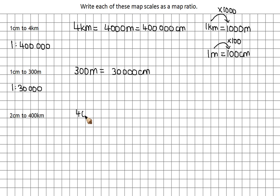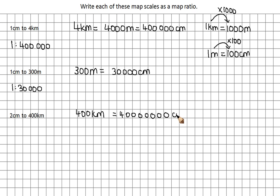And the last one — I'm going to change 400 km into cm. If you have a look, we can compare what we've done and realise that this is just 100 times as big — it's got two extra zeros on the end. So my answer in cm is going to be 100 times as big. We can take our 400,000 and times that by 100, which gives 40 million cm. So 2 cm on the map is 40 million cm in real life, which would be quite a small scale map.